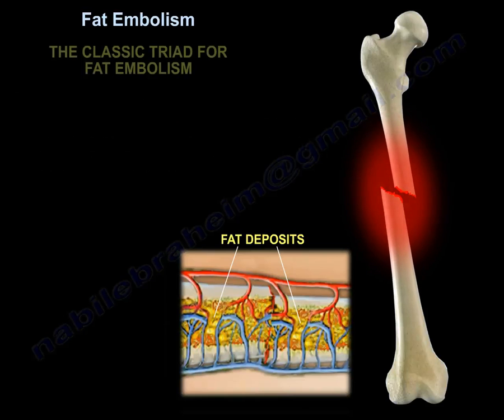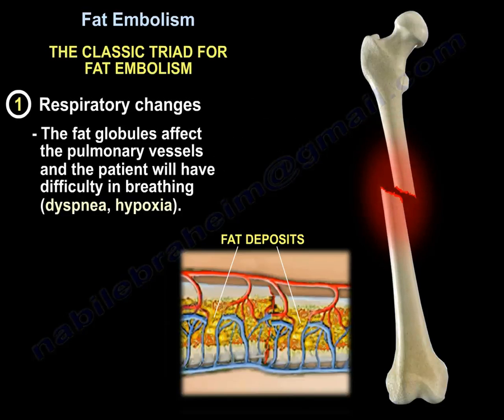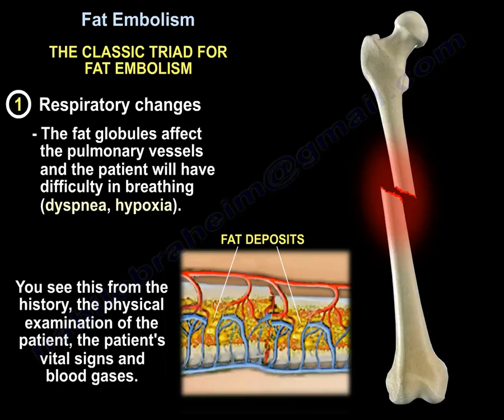This is the classic triad for that patient. Number one is respiratory changes. The fat globules affect the pulmonary vessels, so the patient will have difficulty in breathing, dyspnea, and hypoxia. This is seen from the history, physical examination, and the vital signs of the patient.